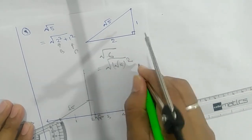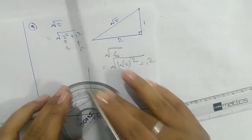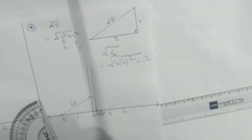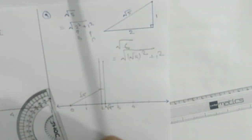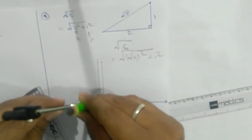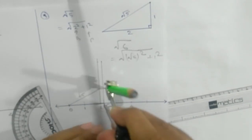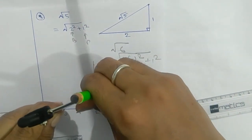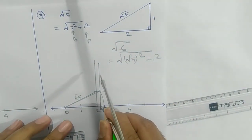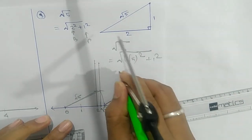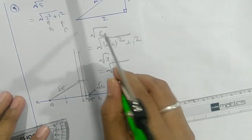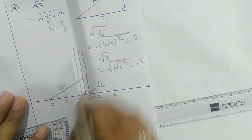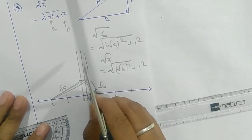If you want root 6, root 6 can be written as (√5)² + 1². That means we need a perpendicular line on root 5. Take a perpendicular line on root 5, then take one unit on it and join. Whatever length you get — that part is your root 6. Similarly, root 7 can be written as (√6)² + 1², so on root 6 you take a perpendicular line, join them, and draw an arc to get root 7.